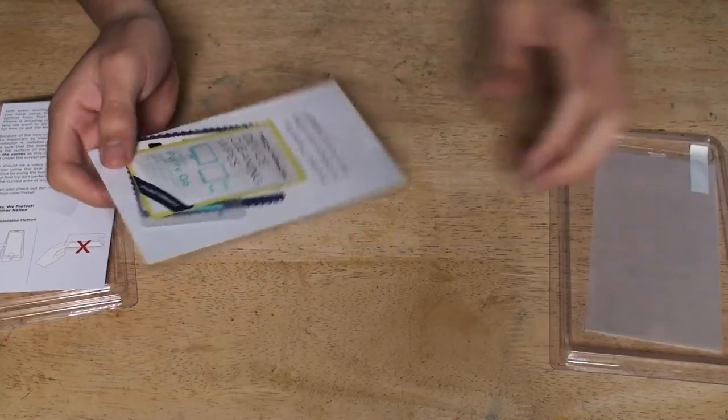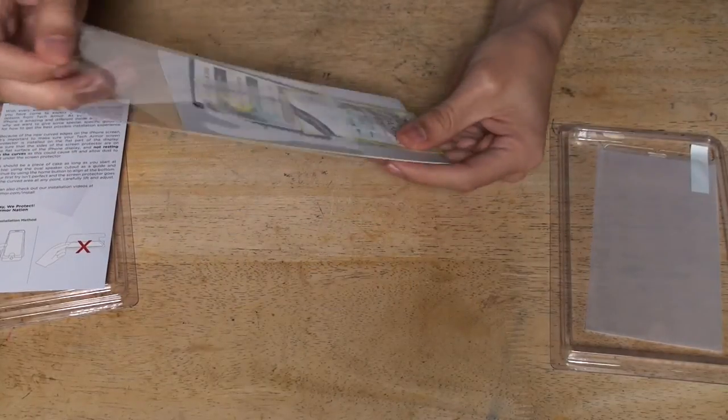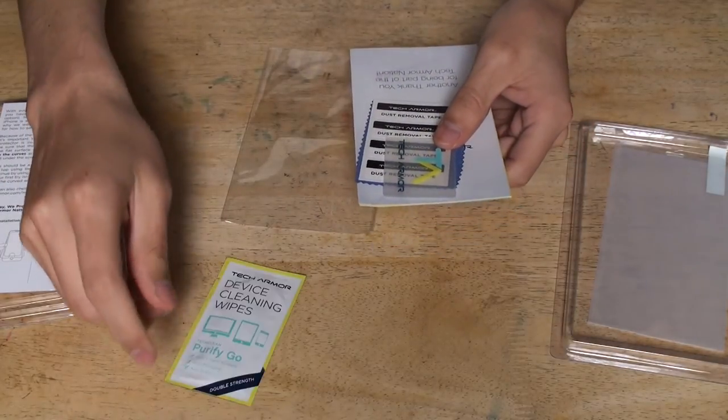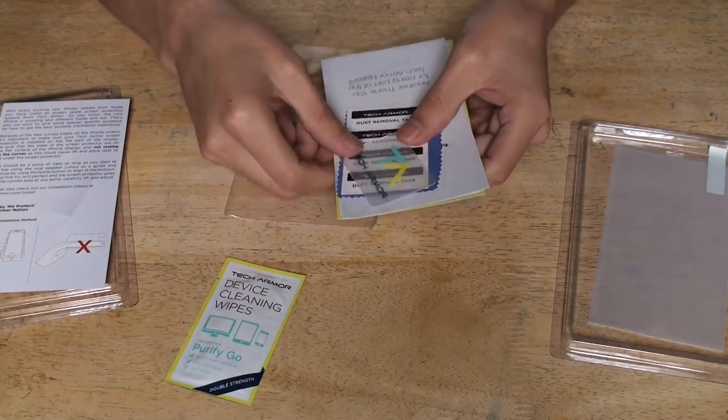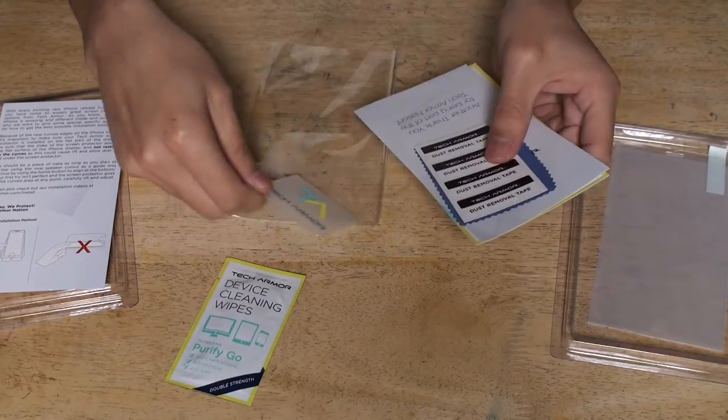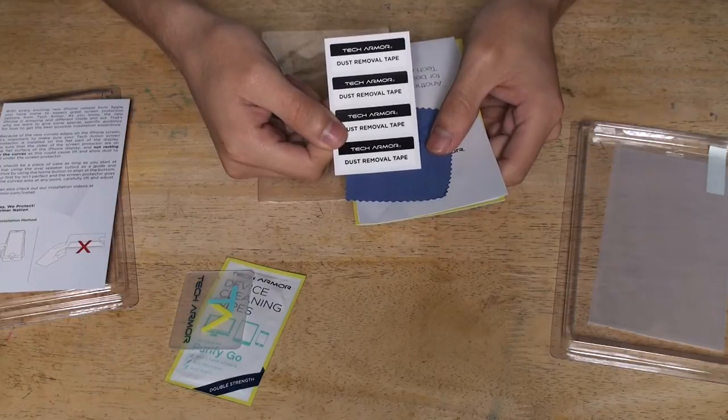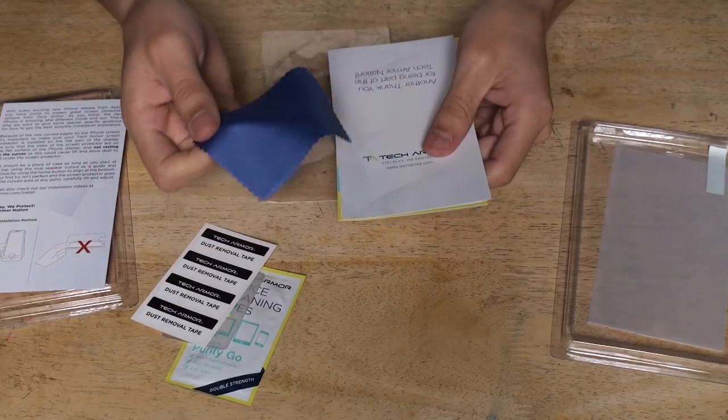Let's see this part. Here is a wipe, a cleaning wipe. It can take any dirt or oil residue out. A little TechArmor to the sides. Some TechArmor dust removal tape, clean cloth, microfiber.